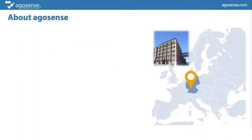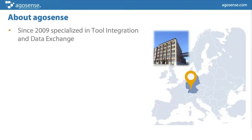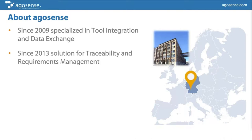A few words about Argosense: we are located in Kronwestheim, close to Stuttgart, and founded the company in 2009. From the beginning we have specialized in tool integration and data exchange — that is our major competence. We detected we should not operate on a single product strategy, so we found that many requirements management tools had missing functionalities, and that was the reason for us to create a solution covering all those gaps, resulting in a sophisticated solution for requirements management and traceability.